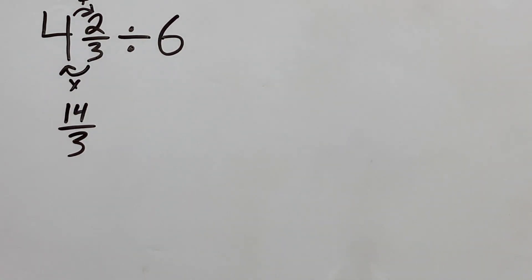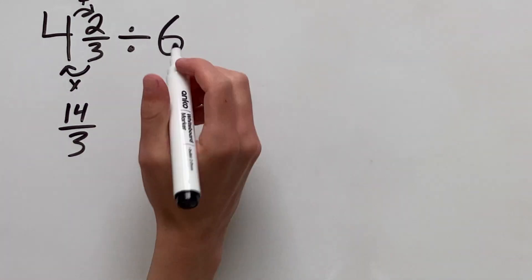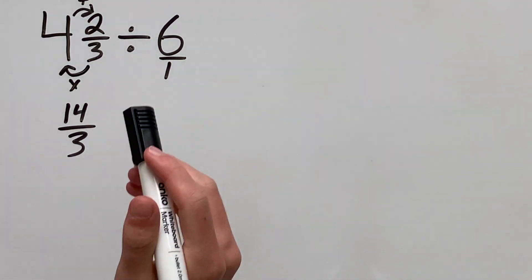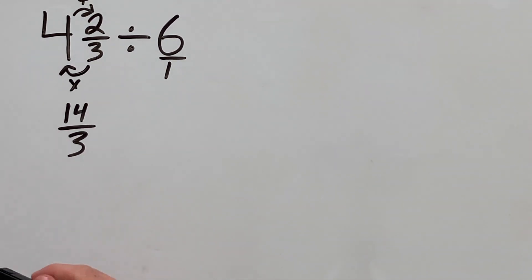Next up, this 6 here can be rewritten as 6 over 1. This is now a regular fraction because 6 over 1 is the same as 6. So we are not messing anything up by doing this.